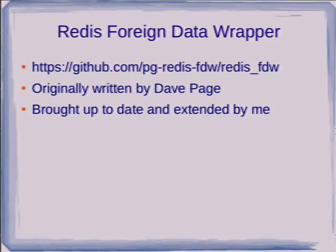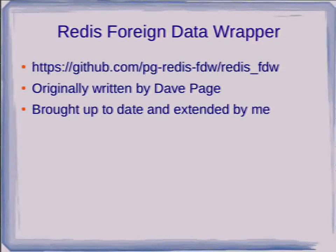The Redis foreign data wrapper is something Dave Page wrote several years ago back in the 9.1 days when we were first starting with data wrappers. Recently it's been brought up to date to run with Postgres 9.2 and somewhat extended by me. We moved it from Dave's personal GitHub space into a more generic repository, which is now the authoritative source. The tip of it is currently broken — I'll tell you about the breakage when I get to the latest stuff I've done.